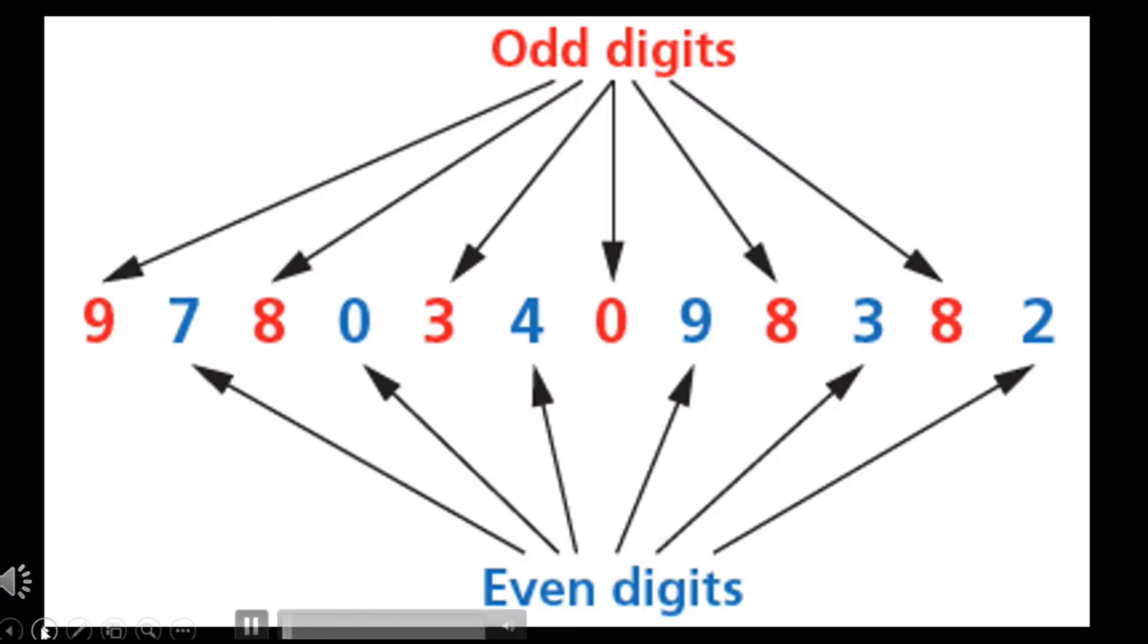Let us take a look at this 12-digit code. Observing the numbers of the code, the odd digits are 9, 8, 3, 0, 8, and 8. Moreover, the even digits are 7, 0, 4, 9, 3, and 2. This is how we identify the odd and even numbers of an ISBN code. Then, proceed with the steps of calculation for the check digit.